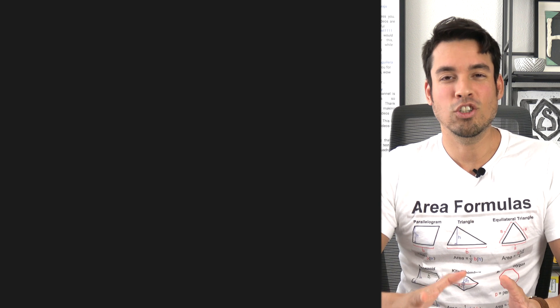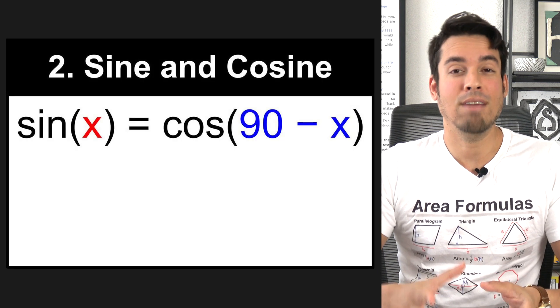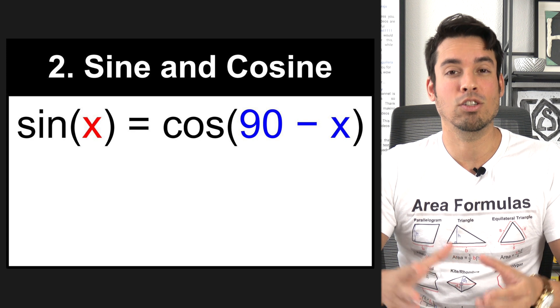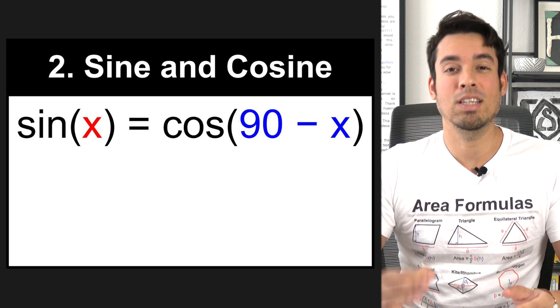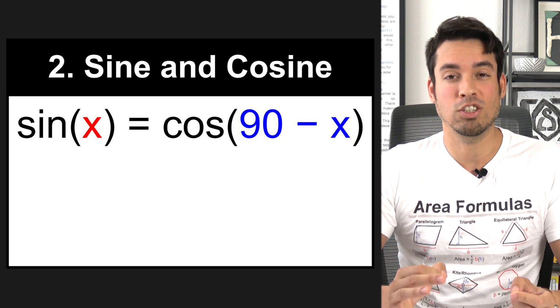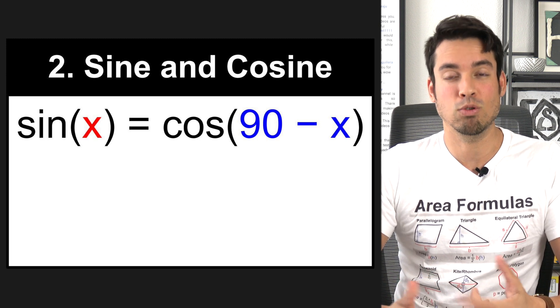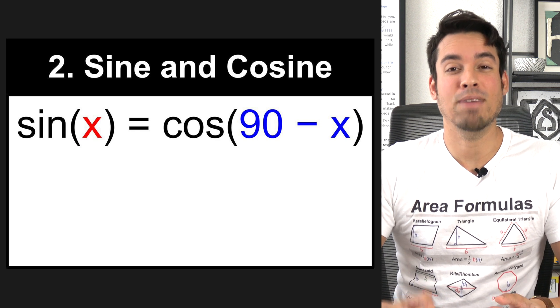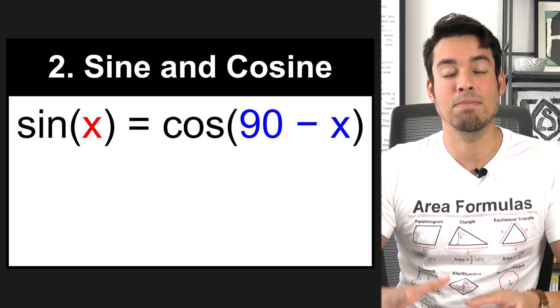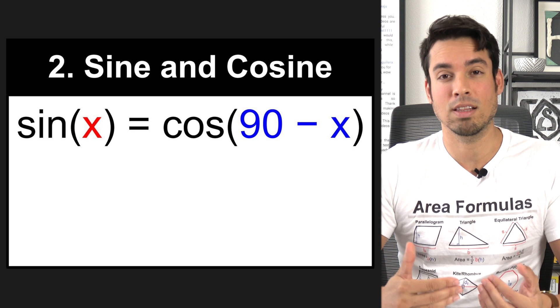The next precision formula involves sine and cosine. Now you have to know the trigonometric ratios found in SOHCAHTOA. That's a must, but this formula is a super awesome precision formula that can save you time and actually help you get to the answer for really difficult trigonometric questions. The formula is sine of x equals cosine of 90 minus x, but let's deconstruct that a little bit.